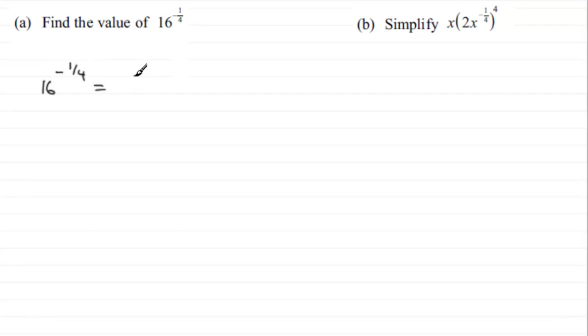Well if you've got a negative power you should know that's the same as 1 over 16 in this case to the positive quarter. And when we have a quarter that means that we take the fourth root of 16, and the fourth root of 16 is going to be 2 so you've got 1 over 2.